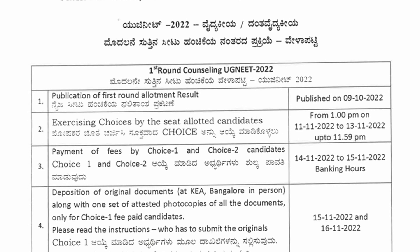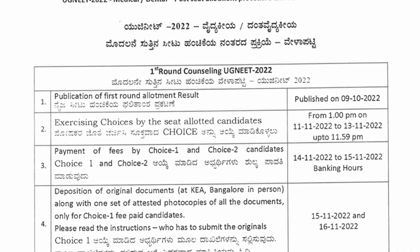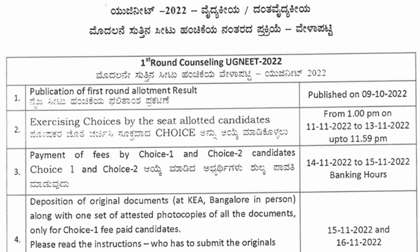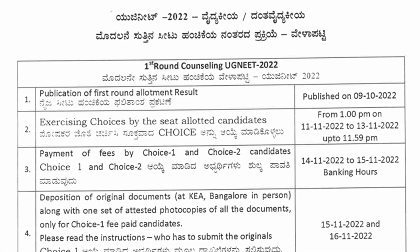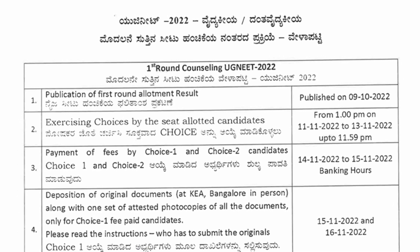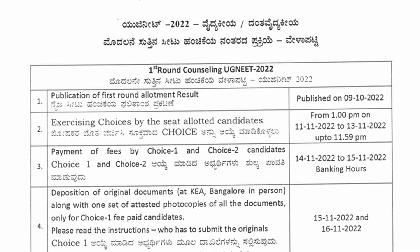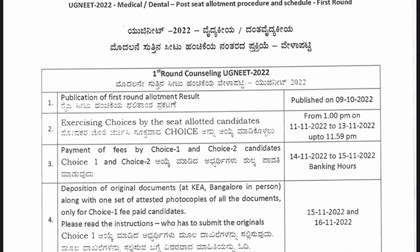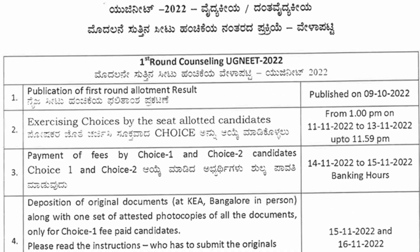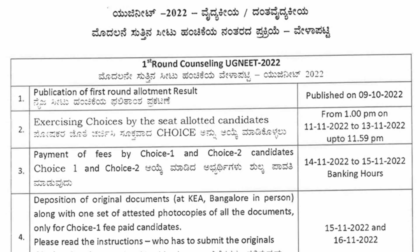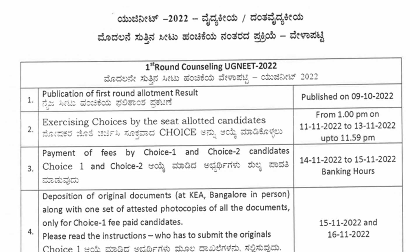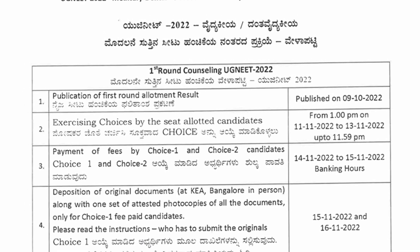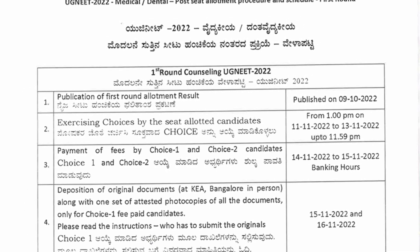These are the four choices to be exercised by seat allotted candidates. As per the counselling schedule, candidates allotted seats in the first round can exercise their choices from November 11th to 13th. Payment of fees by choice number one and choice number two candidates is to be done from November 14th to 15th.